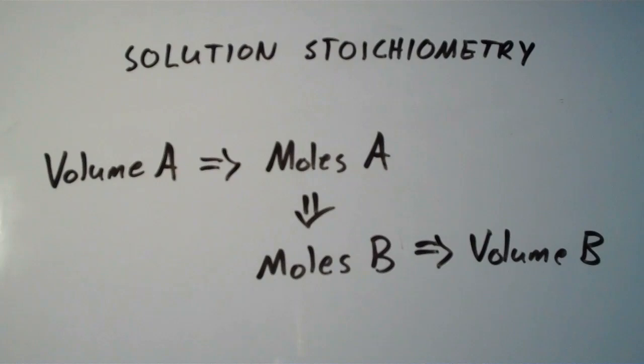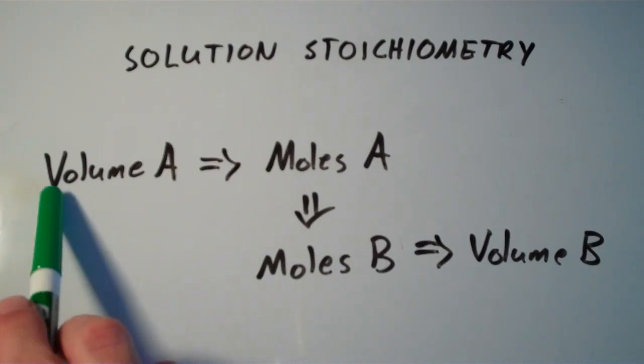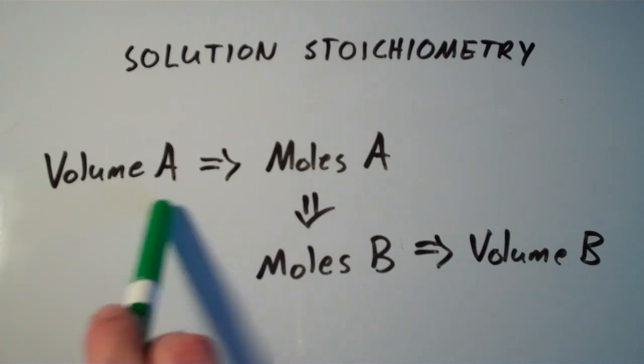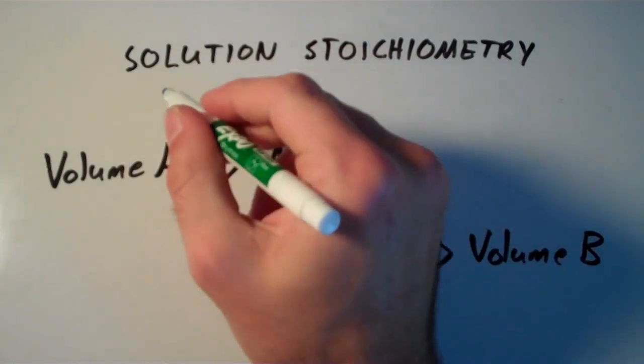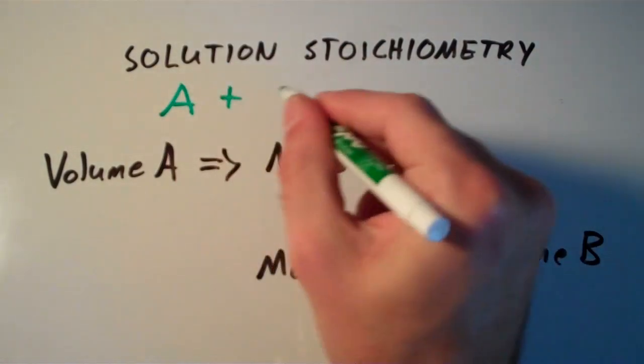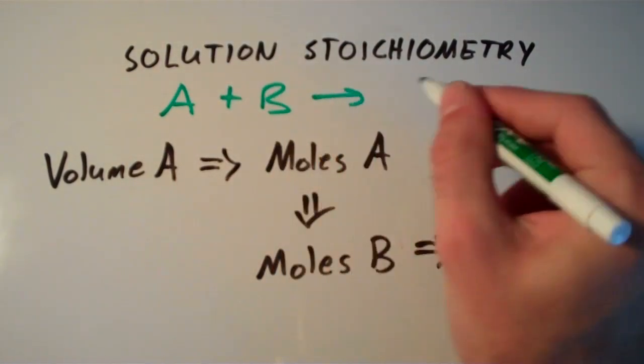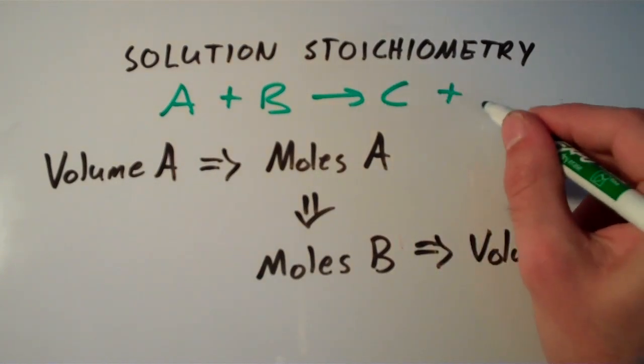So a typical solution stoichiometry problem might look like this. You have the volume of some compound A, and you're trying to figure out the volume of some compound B. And this is all according to a balanced chemical equation. So if I have the following equation, say, for instance, A plus B yields C plus D.